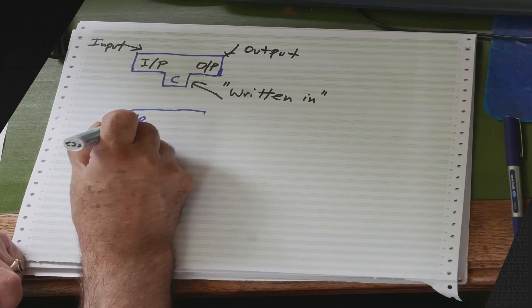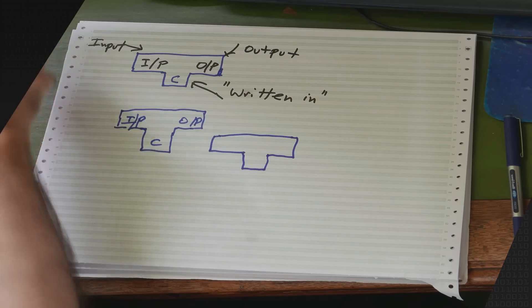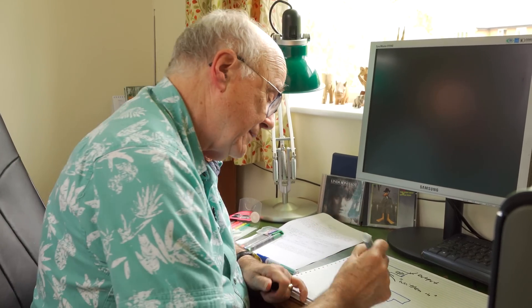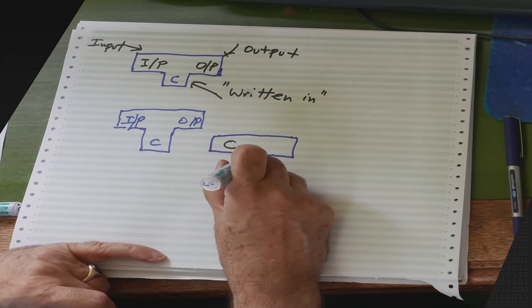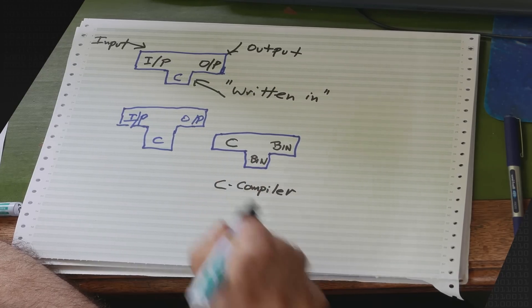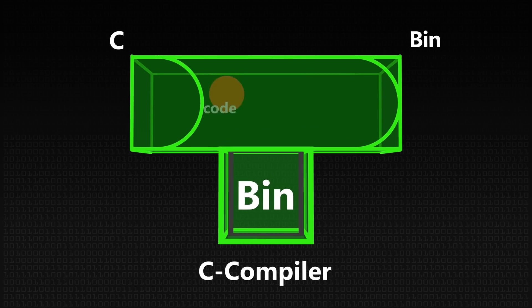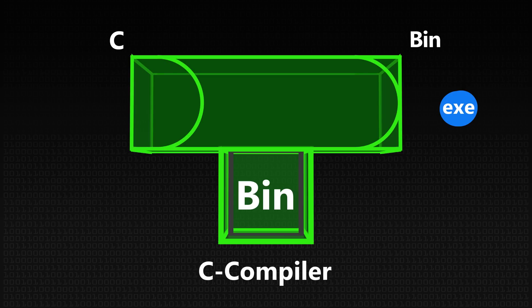Here you begin to see the power of t-diagrams. Draw this one again: input, output, written in C. Here's the clever bit — positioning another t-block up against this one shows you how this has to be processed. What you need is something that will turn your C program statements into a working binary on the machine you're working on. Somebody provided a thing capable of taking in C statements — it is itself an executable binary running on your ARM or Intel or Apple chip. This is my C compiler, of course.